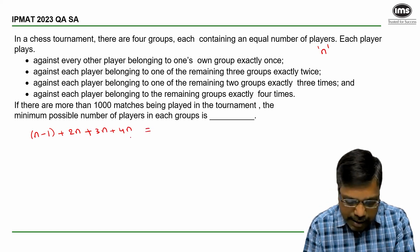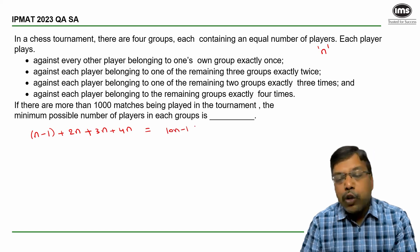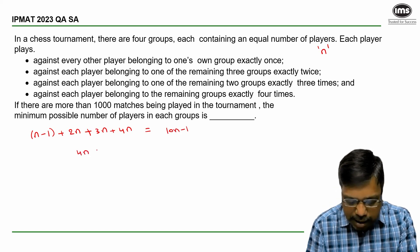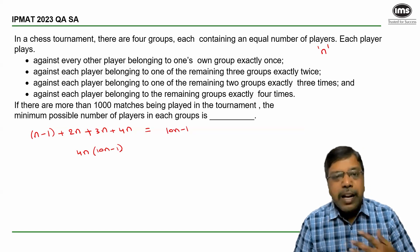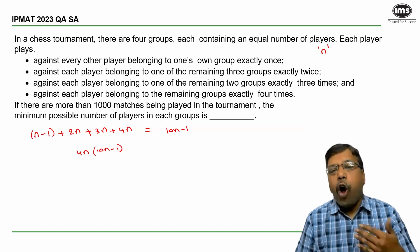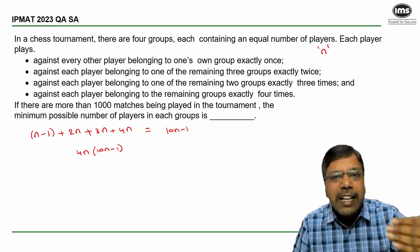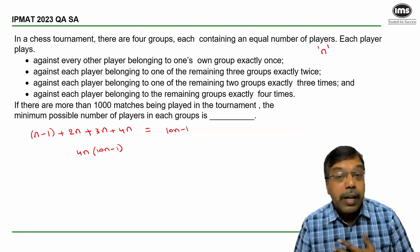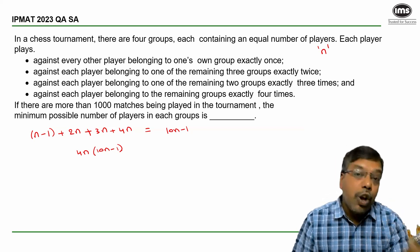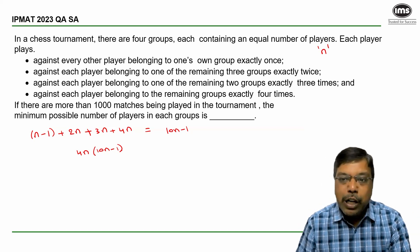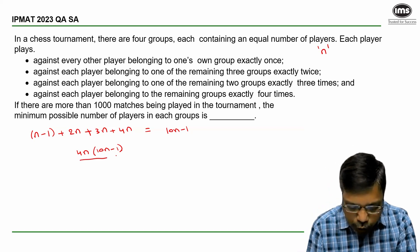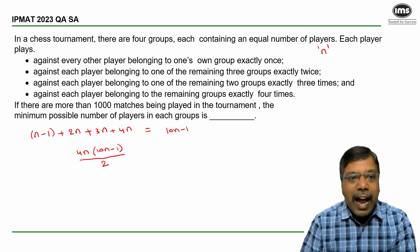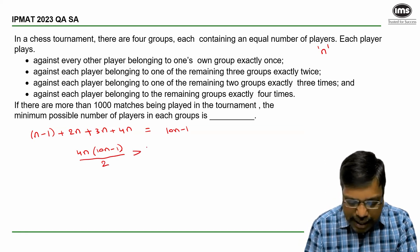The total number of matches is the number of players multiplied by the matches of one player. However, every match is counted twice — once for each player involved — so the number of unique matches is 4n × (10n - 1) divided by 2. The condition is that the total number of matches is greater than 1000.